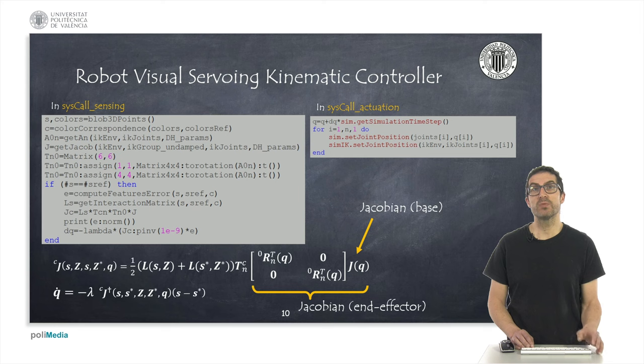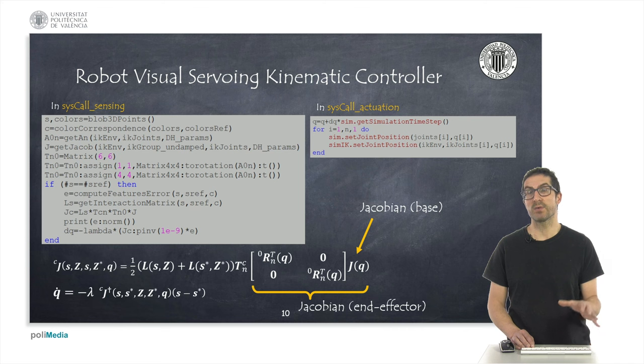We just need to perform a simple linear transformation so that the jacobian is multiplied with a block-wise diagonal matrix with the rotation matrix between the end effector and the robot base. On the other hand,